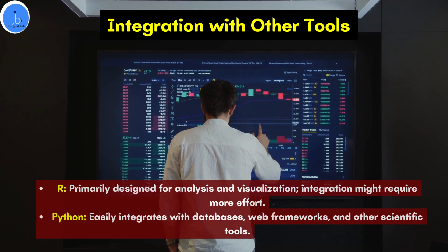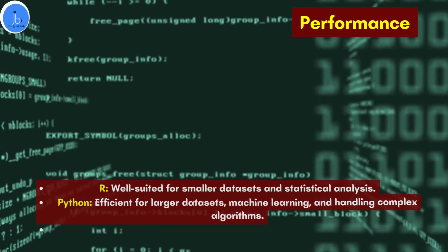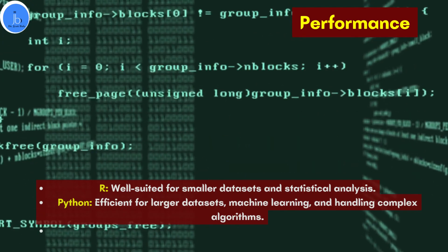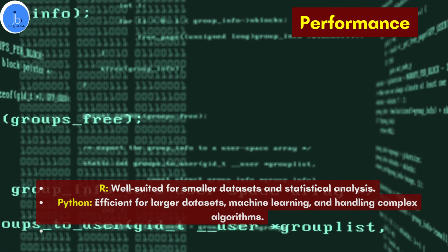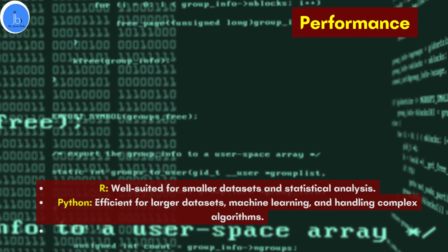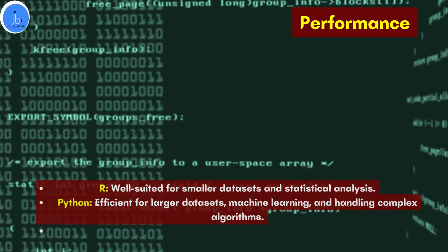At the level of performance, R is well suited for smaller datasets and statistical analysis, while Python is efficient for large datasets, analytical purposes, machine learning, and handling complex algorithms.